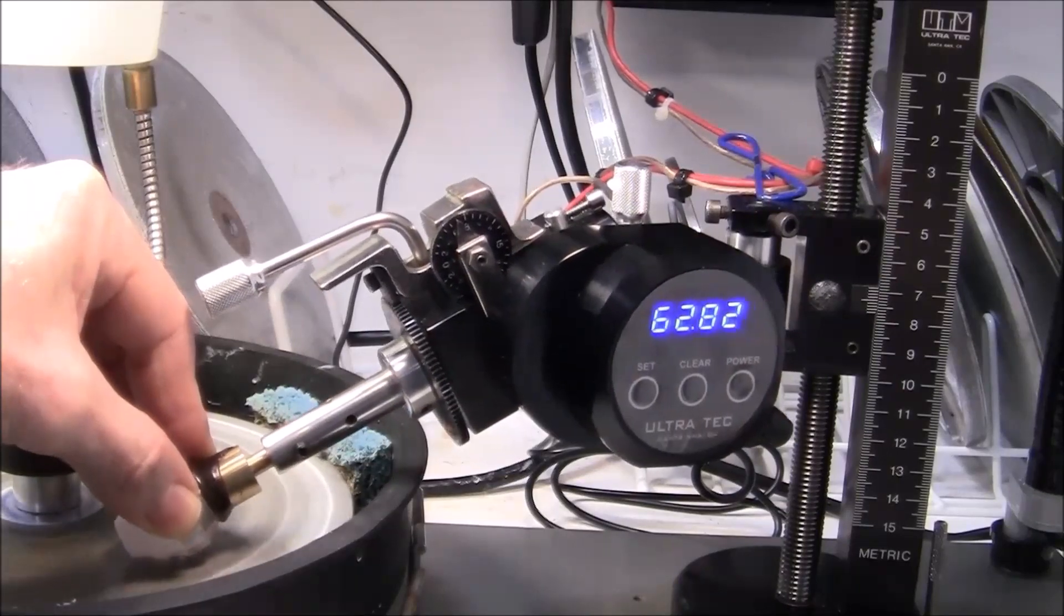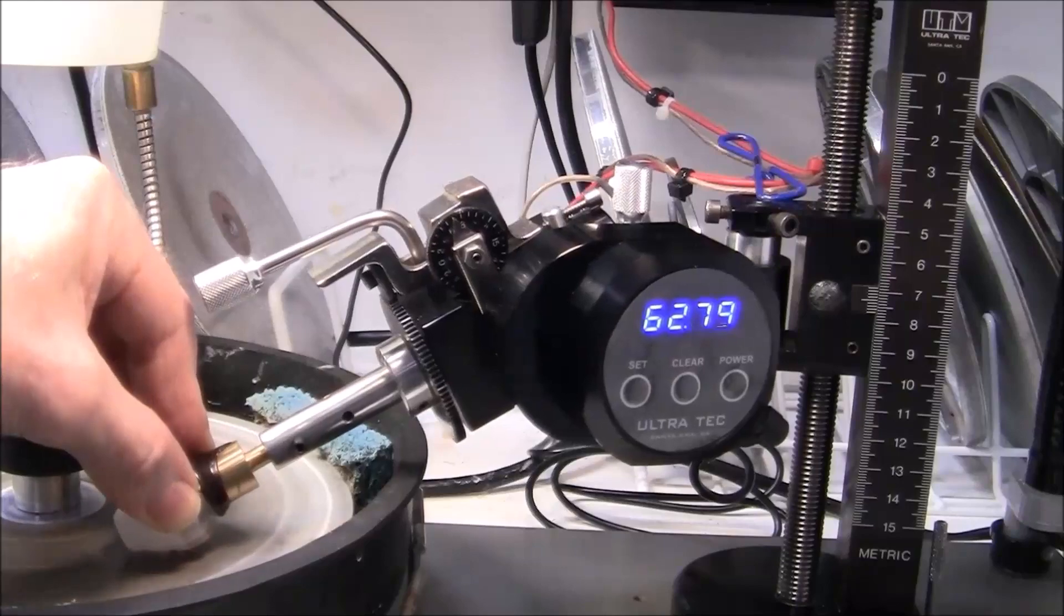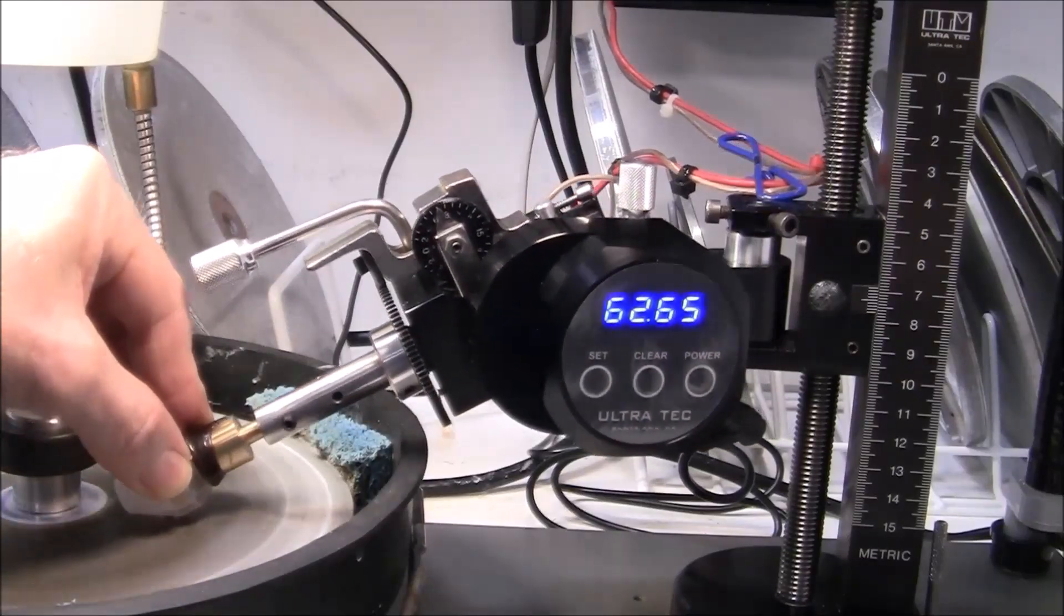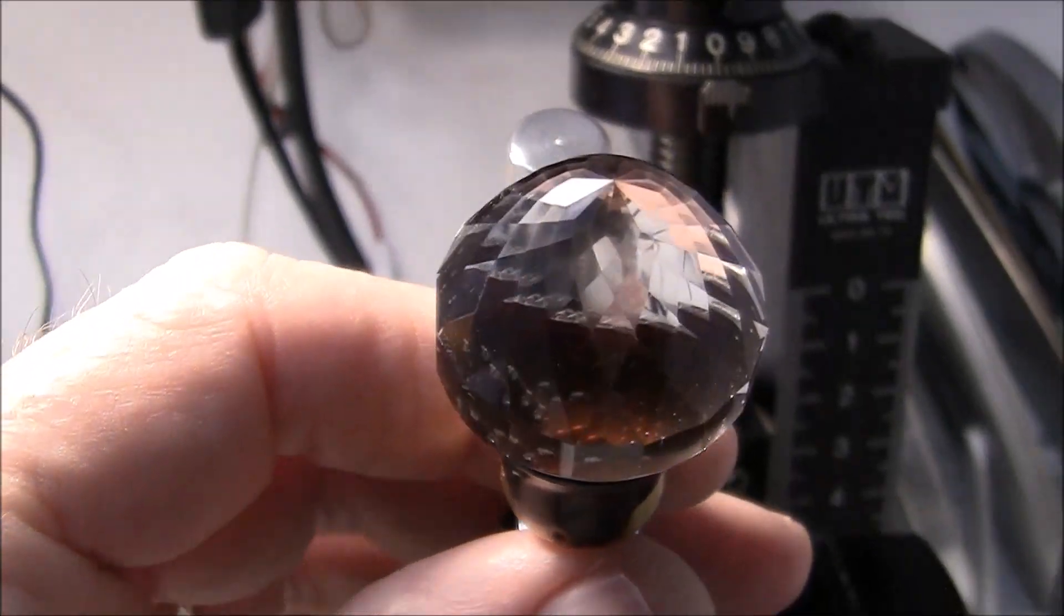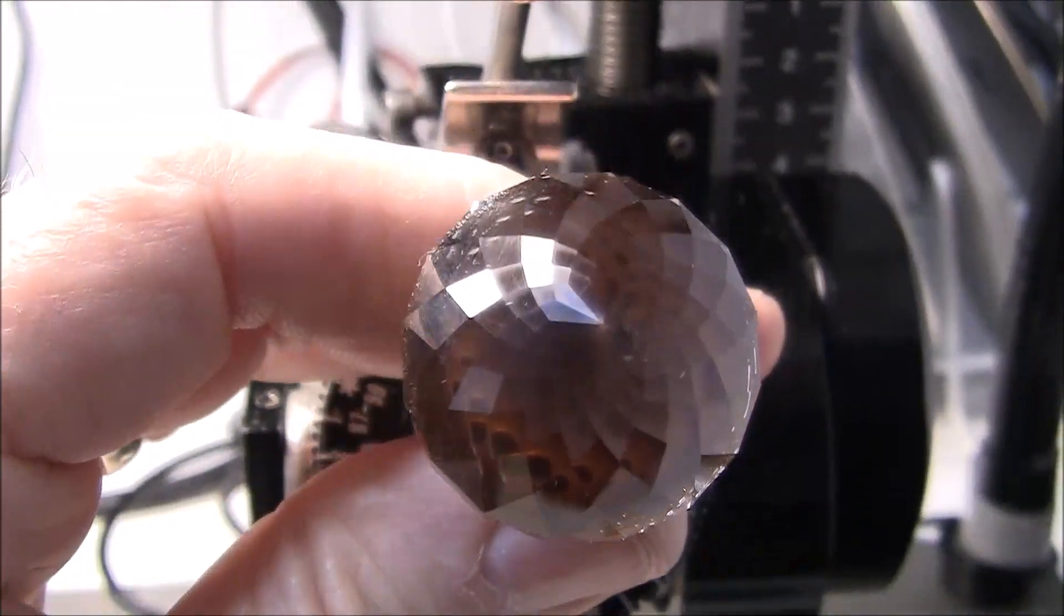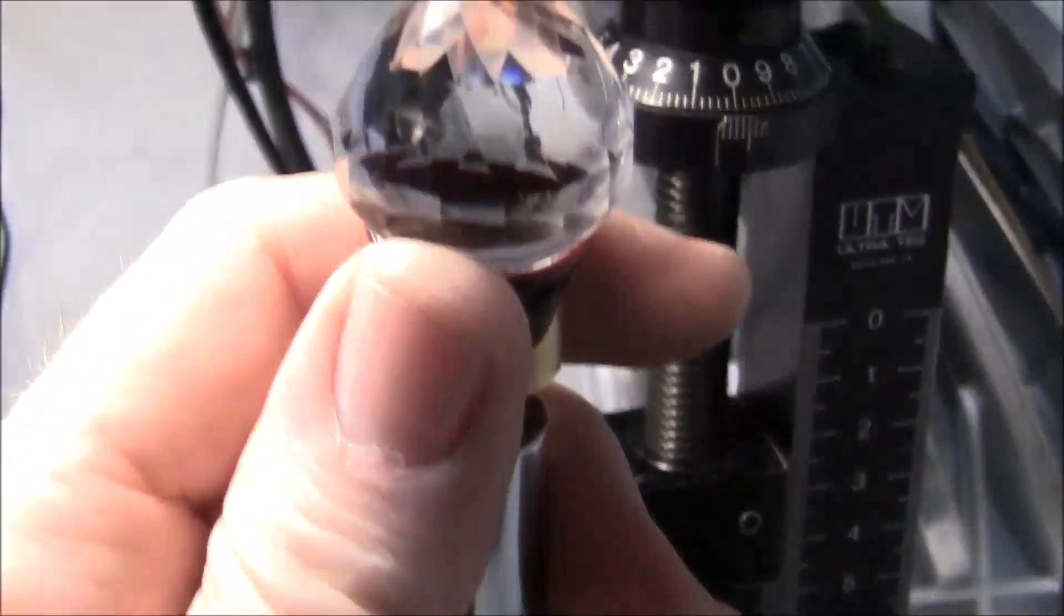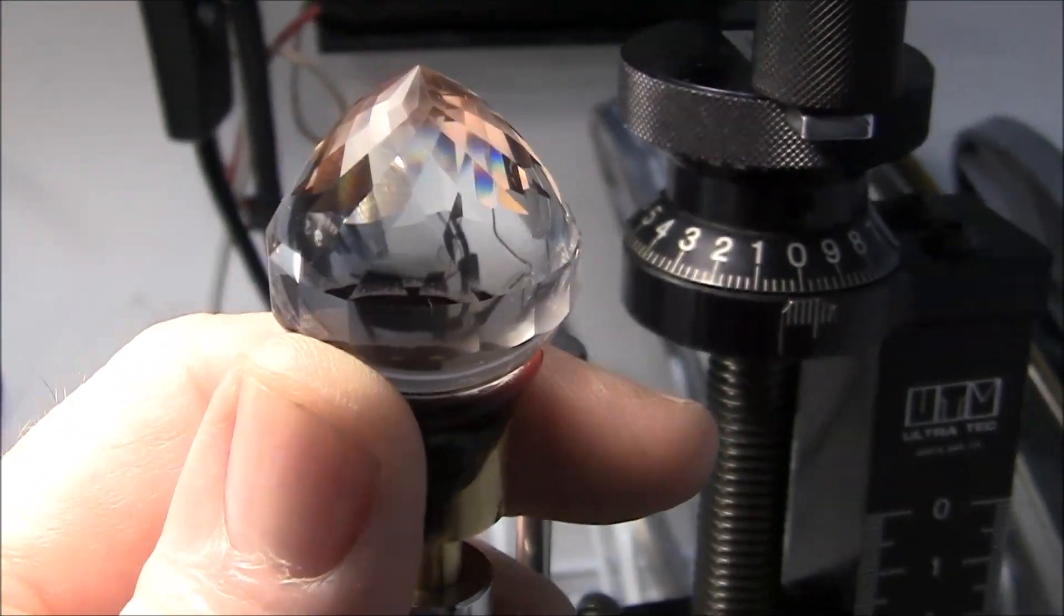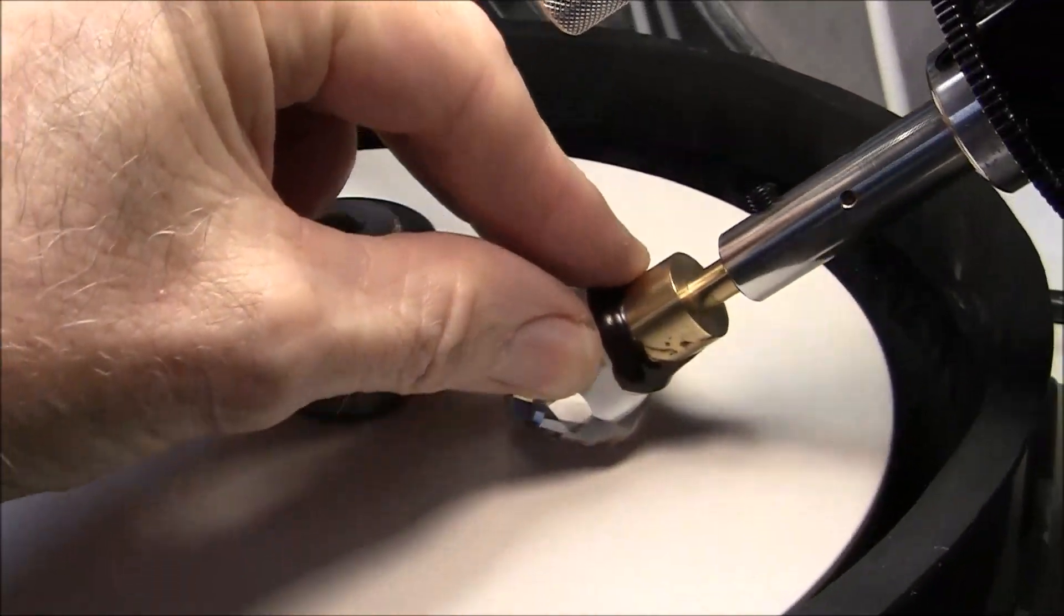Here, I'm going ahead and cutting the facets using a rough cutting disc and I used a 260 for the preforming. I've gone around and cut all of the facets, all the way up to the culet tip and these have been polished also.